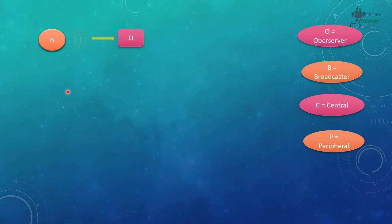Let's see how two devices communicate in a Bluetooth protocol. O stands for observer, B stands for broadcaster, C stands for central, and P stands for peripheral. The broadcaster advertises data but cannot connect, and the observer receives that data but also cannot connect. For example, if you're a shopkeeper wanting to advertise a sale, you can create a broadcaster device that broadcasts advertising data, and customer mobile phones acting as observers can scan that data.